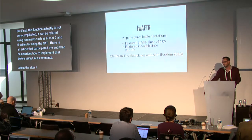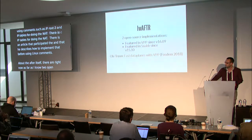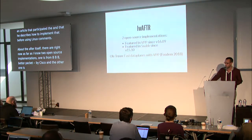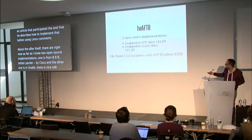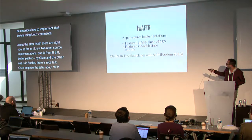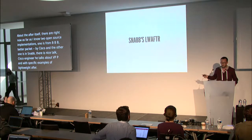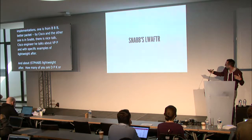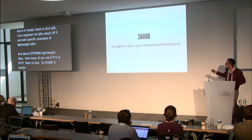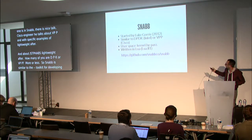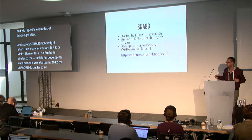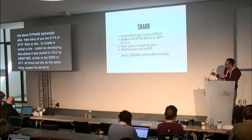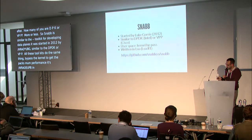Regarding the AFTR itself, there are currently two open source implementations. One is from VPP — Vector Packet Processing — a toolkit for fast data planes by Cisco. The other is in Snabb, the one that Igalia implemented. Snabb is similar to DPDK or VPP — it's a toolkit for developing data planes, started in 2012 by Luke Gorrie. It does kernel bypass: all these toolkits bypass the kernel and talk directly to hardware for maximum performance. One particularity of Snabb is that it's written in Lua and runs with LuaJIT, a very performant virtual machine.